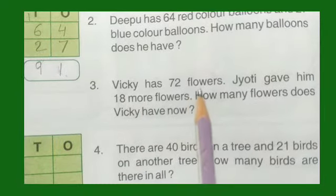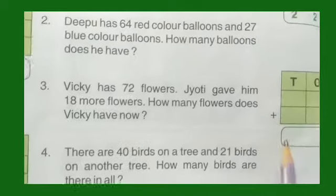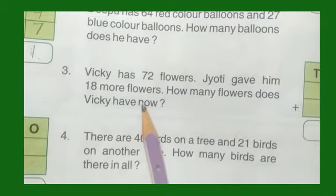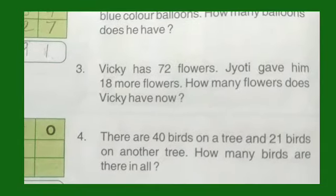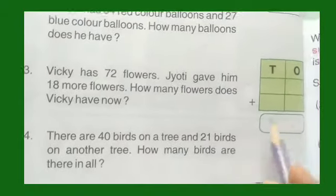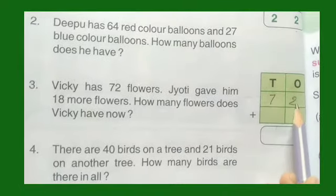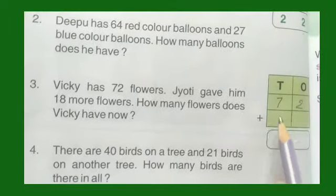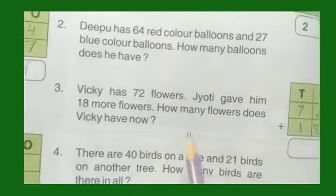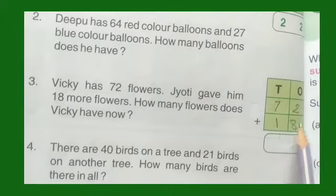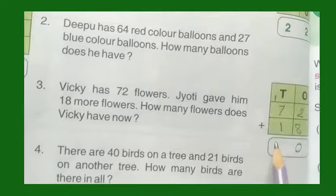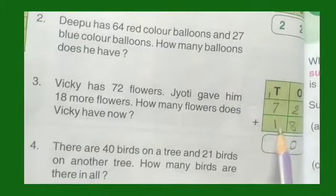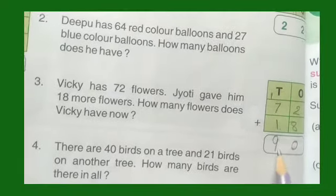Now, number 3: Vicky has 72 flowers. Jyoti gave him 18 more flowers. So how many flowers does Vicky have now? We write down 72, and add 18 more. 8 plus 2 is 10, so we write 0 and carry 1 to the tens house. 7 plus 1 is 8, plus 1 carried is 9. So there are 90 flowers.